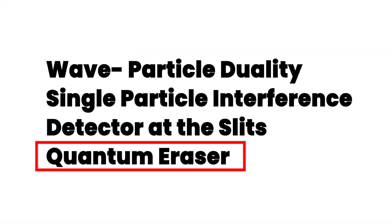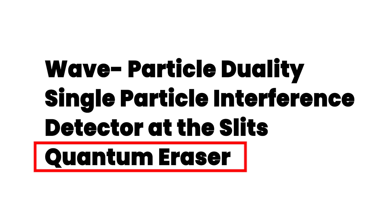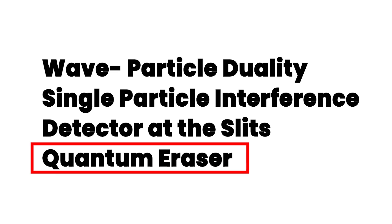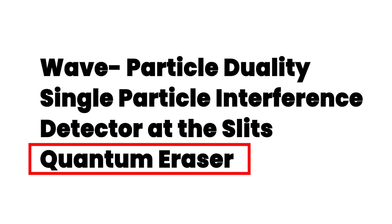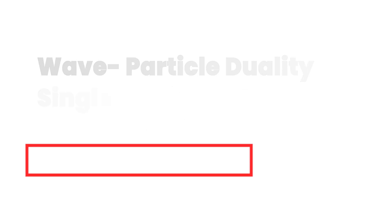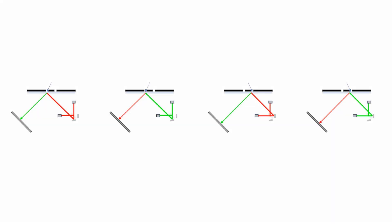Quantum eraser. So maybe it's the act of detecting the particle that makes it behave in the classical expected way. In the quantum eraser experiment, we place the detectors and then destroy the information they collect. The interference pattern is back, sort of, but the details of the experiment matter. It turns out that the quantum eraser experiment and its relative, the delayed choice quantum eraser, are not that illuminating.